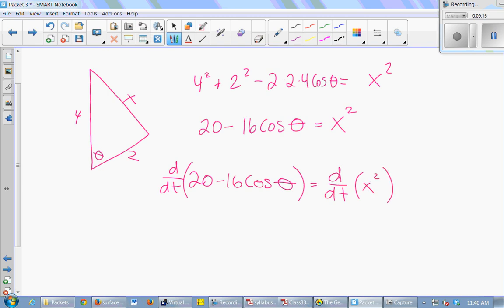Okay, so d/dt of 20 is 0. So this becomes positive 16sin(theta) times d(theta)/dt. And d/dt of x² becomes 2x times dx/dt.